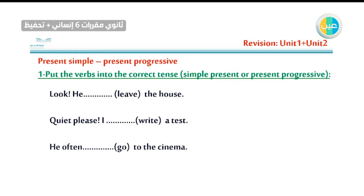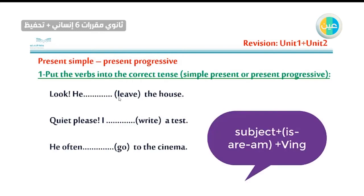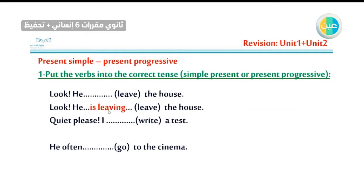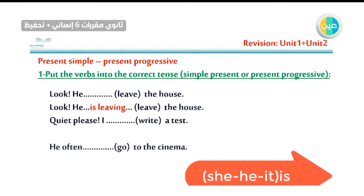Number one: 'Look. He leave the house.' From the word 'look,' we can notice that he is talking about something in front of him. So it's present progressive because it's happening now. The rule for present progressive: subject + helping verb (is, are, or am) + verb with -ing. He is leaving the house. We delete the E then add -ing.